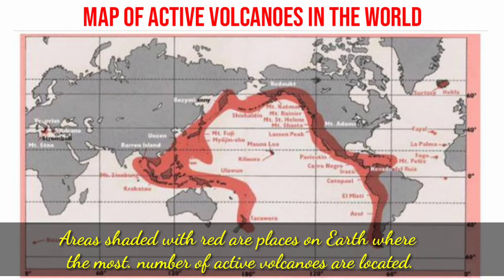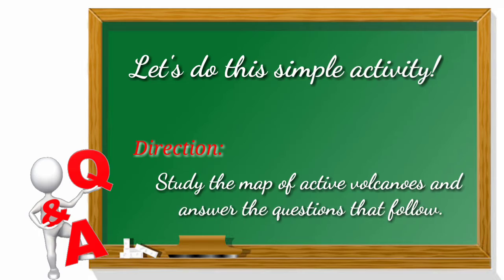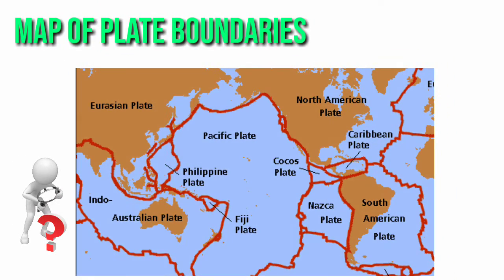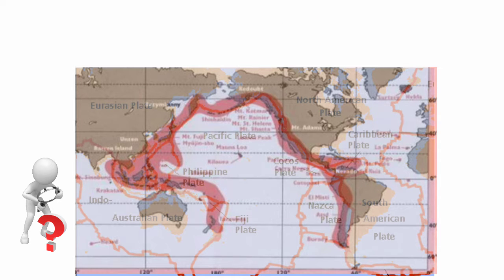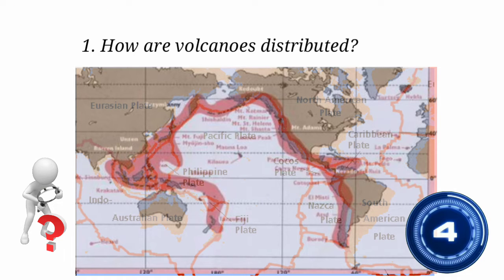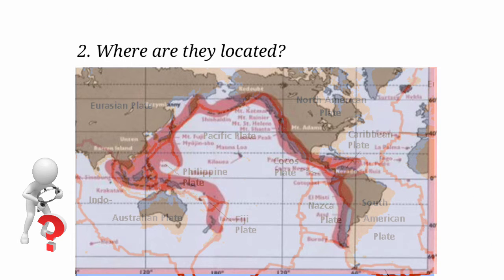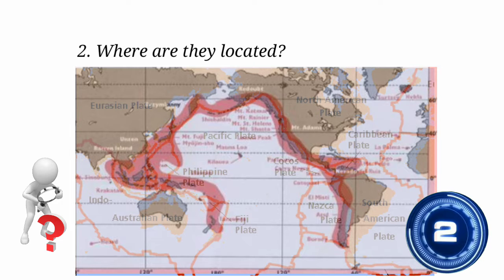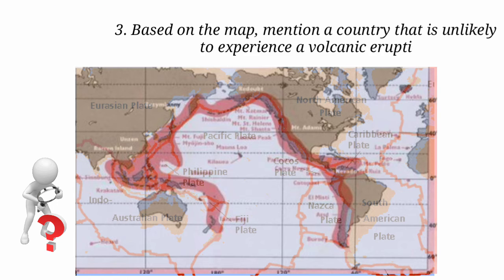Areas shaded with red are places on Earth where most of the active volcanoes are located. What do you notice? Before we discuss this, let's ponder on a simple activity. Let's say we have the map of the lithospheric plates and place the map of active volcanoes on it. Pause the video and try to answer the following questions: Number 1, how are volcanoes distributed? Number 2, where are they located? And number 3, based on the map, mention a country that is unlikely to experience a volcanic eruption.